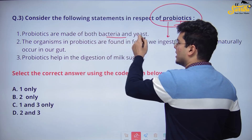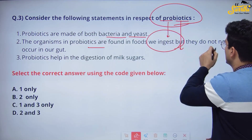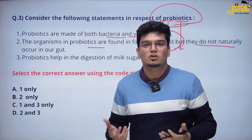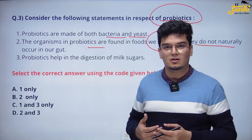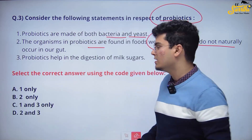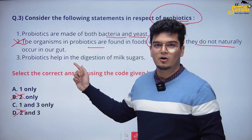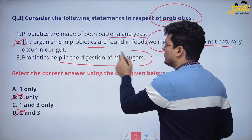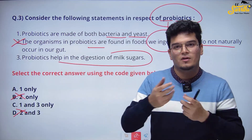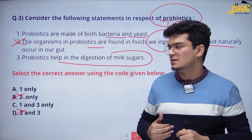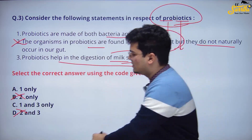Probiotics are made of both bacteria and yeast — of course, this is correct. Second statement: organisms in probiotics are often found in foods we ingest but they do not naturally occur in our gut — this is wrong, so we can eliminate options B and D. The decision will be made on statement 3: probiotics help in digestion of milk sugars. Of course — that is why curd is easier to digest, because curd contains lactobacillus. When you take lactobacillus, it is easier to digest. So probiotics do help in the digestion of milk and milk sugars. Option 3 is correct, answer is C.